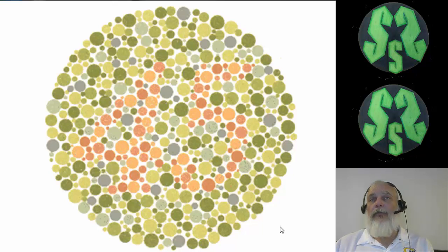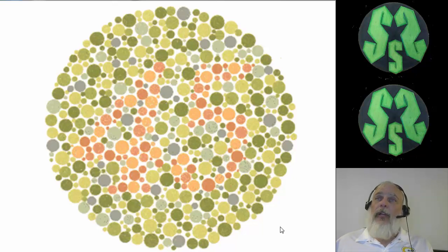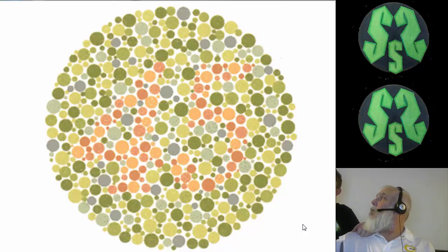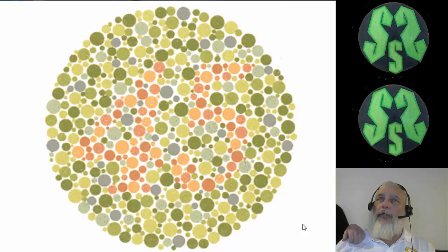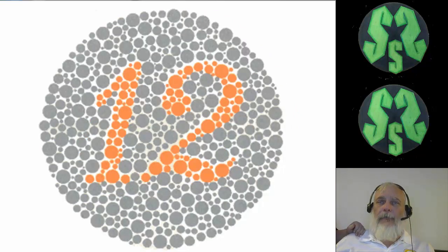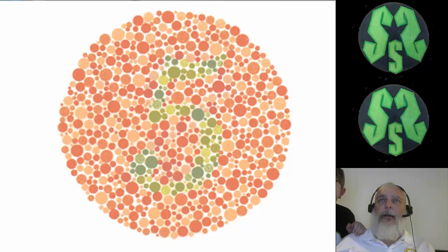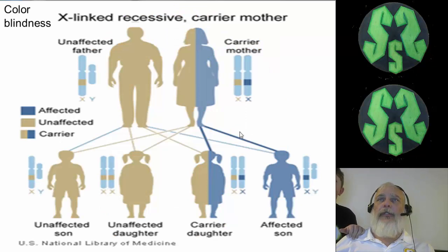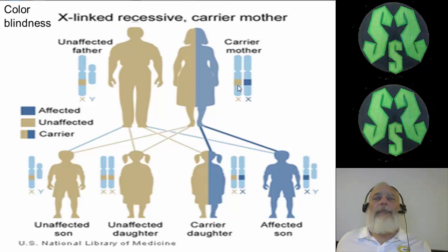Here's a colorblind test. Surprisingly, I've had students who never knew they were colorblind until they saw this lecture. If you take a look at this, you should be able to see a number. Y-Guy is going to try this out. He doesn't see a number — the number is 45. Next: Y-Guy sees 12 — correct. Next: Y-Guy says eight, but the answer is five. And this last one: Y-Guy doesn't see one, but it's 74. So Y-Guy is colorblind, and that's okay.